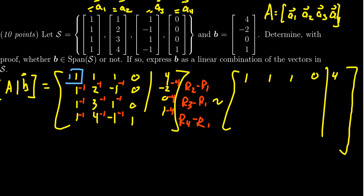So for the second row, we're going to get 0, 1, negative 2, 0, negative 6. For the third row, we're going to get 0, 2, 0, 0, negative 4.